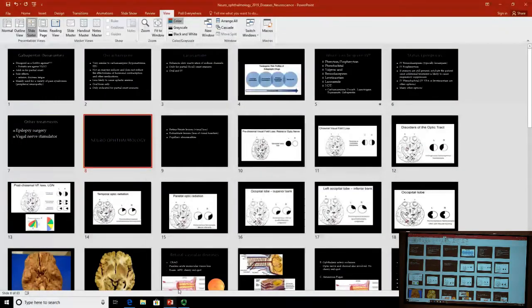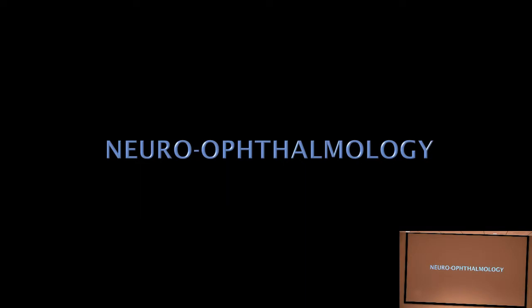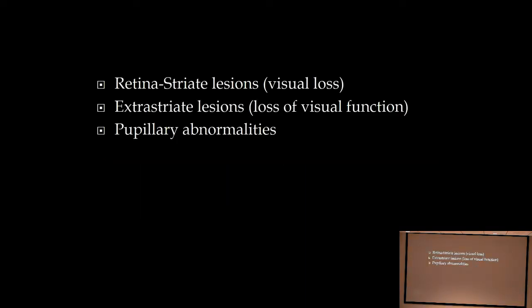Neuro-ophthalmology is one of my favorite areas of neurology. We're going to focus on visual loss from the retina all the way back to the occipital lobe — we covered the big picture during the neurology examination last year, but this will be more detailed. We'll also talk about loss of visual function, not just visual acuity and visual fields, since 50% of the brain is dedicated to processing vision.